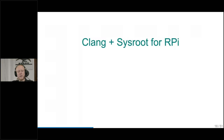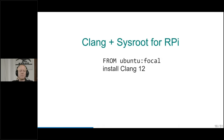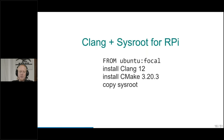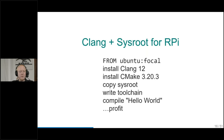We said we have GCC and also Clang. Let's try Clang — take two. This time using Clang, we already know the triple is not the right one, so we also cannot use the multilib library package. We also have to try the sysroot way of doing it. So we start with Ubuntu again, install Clang, install CMake, copy a sysroot, write a toolchain, compile our Hello World, and then we're done.